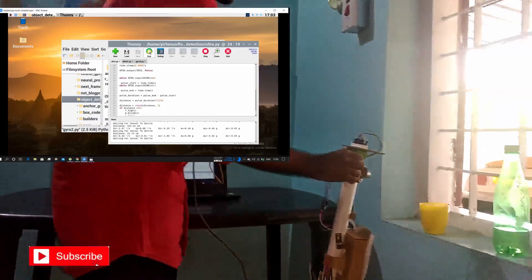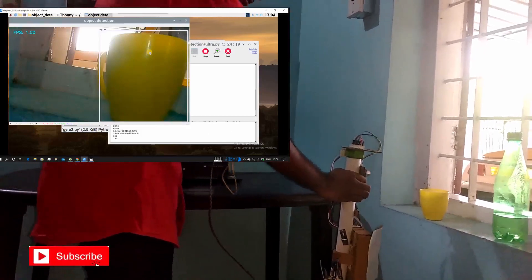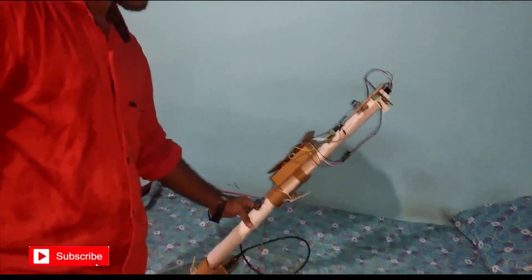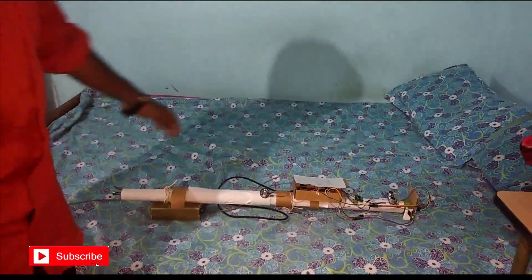As you can see, I'm demonstrating with a cup. If the blind person loses their stick, the gyroscope detects the acceleration and you can see the buzzing sound alarming based on its intensity. The blind person can then retrieve their stick.